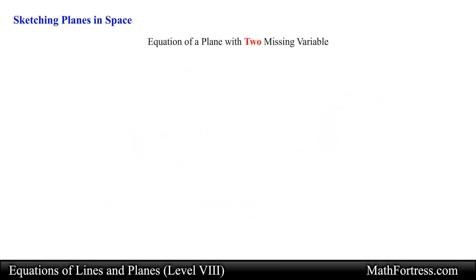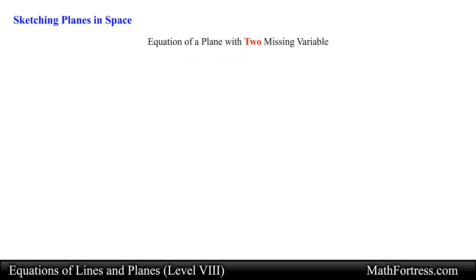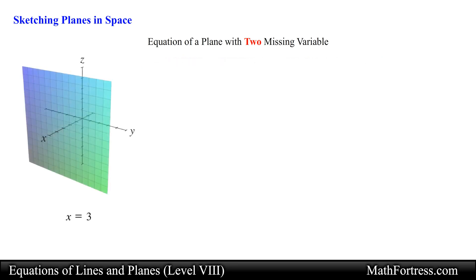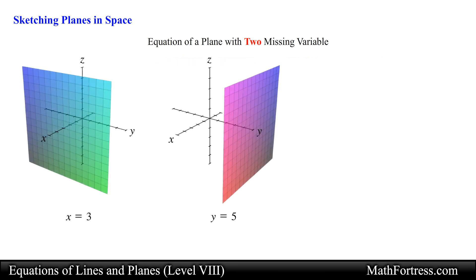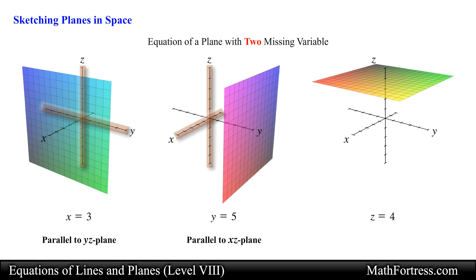Finally, if two variables are missing from the equation of a plane, it is going to be parallel to the coordinate plane represented by the missing variables. For example, the equations x equals 3, y equals 5, and z equals 4 can be graphed as follows. Notice that the plane x equals 3 is parallel to the yz plane, the equation y equals 5 is parallel to the xz plane, and the equation z equals 4 is parallel to the xy plane.